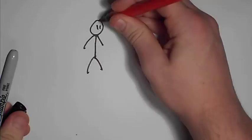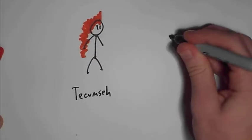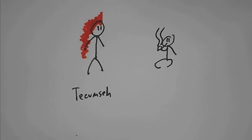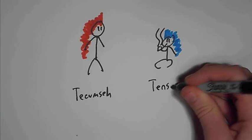Tecumseh and his brother Tenskawatawa, a prophet, had the goal of uniting separate Indian communities into a confederation centered around their town, Prophet's Town.